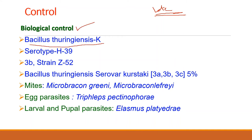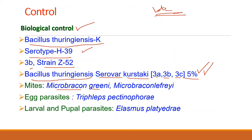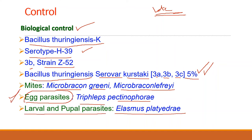For biological control, Bacillus thuringiensis serotype H-3 strain Z52, and Bacillus thuringiensis var. kurstaki 3A, 3B, 3C at 5% can be used, along with parasitic mites Microbracon greeni and Microbracon lefroyi to control this pest. Trichogramma patinophori is an egg parasite which can destroy the eggs of this pest, and Elasmus platyrhopalus can be used to control the larval and pupal stages.